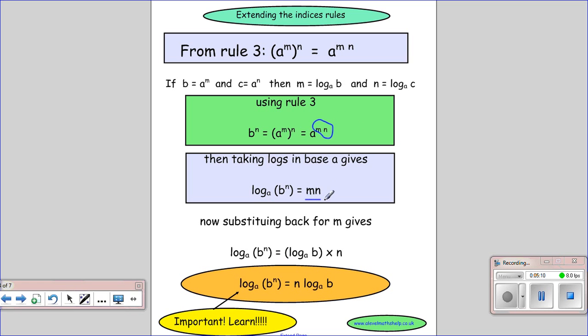Now once again, we're going to substitute back for m. Not for n, just for m. So we get log in base a of b to the n is log in base a of b times n.